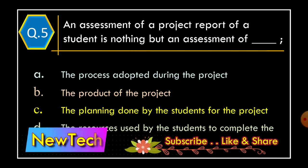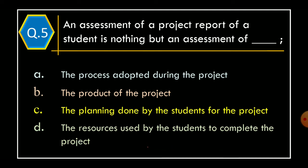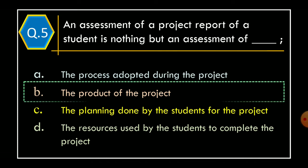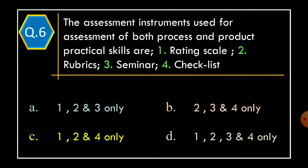Question 5: An assessment of a project report of a student is nothing but an assessment of — Option A: the process adopted during the project; Option B: the product of the project; Option C: the planning done by the students for the project; Option D: the resources used by the students to complete the project. The correct option is Option B: the product of the project.